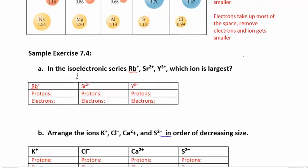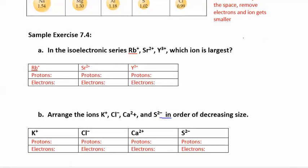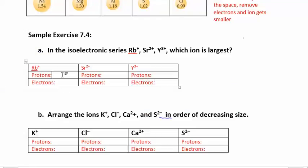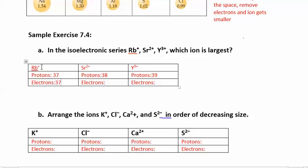Let's look at another isoelectronic series with rubidium, strontium, and yttrium — elements 37, 38, and 39, so they have 37, 38, and 39 protons respectively. Rubidium has a plus 1 charge, meaning it lost one electron, giving it 36 electrons. Strontium lost 2 electrons, giving it 36. And yttrium lost 3 electrons, also giving it 36. So everyone here has 36 electrons — this is another isoelectronic series.